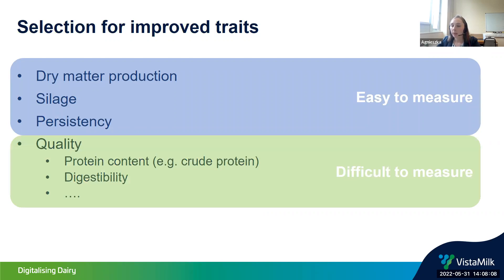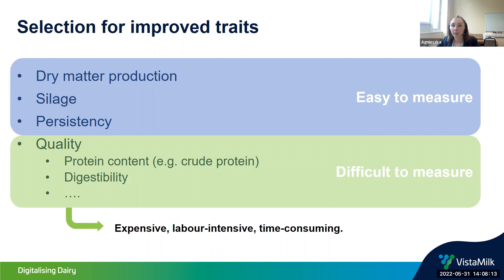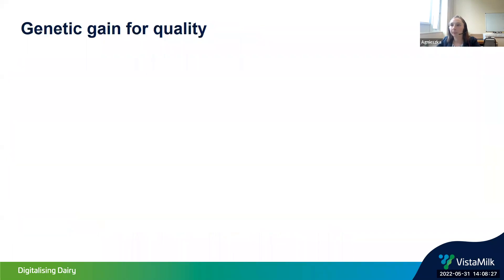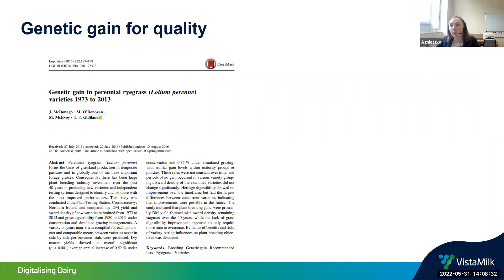Another important thing is the digestibility of the feed. The first three traits are relatively easy to measure, whereas quality is difficult to measure because it's an expensive, labor-intensive, and time-consuming process. Usually you wouldn't have enough budget to send all the samples gathered from the field to the laboratory for independent testing.